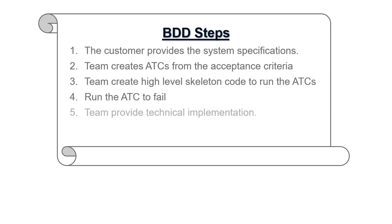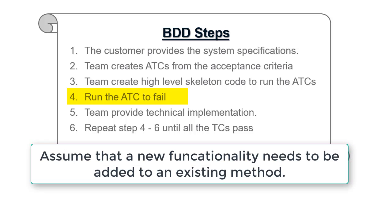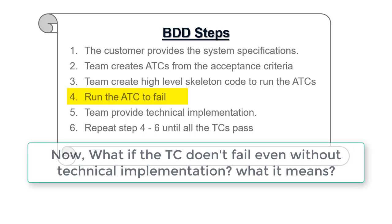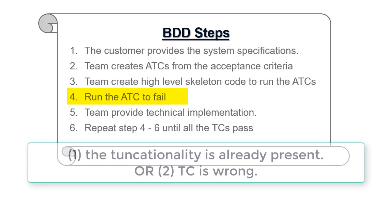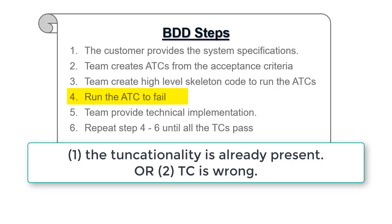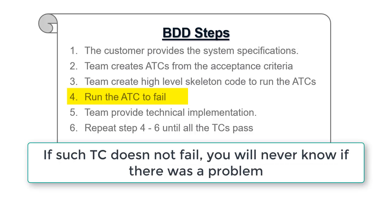But coach, why is it important to run the test case to fail? I remember there is a similar step in test-driven development too. Assume that you are working on a maintenance project. A new functionality needs to be added to an existing method. What if you run the test case and it does not fail even before the implementation? It means either the functionality is already present or maybe the test case is not correctly written. Which also means if it does not fail, you will never know if there was a problem. This is why it is an important step.